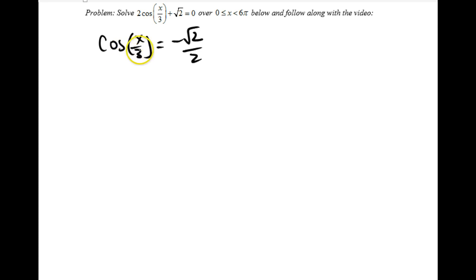Now my goal is to get x by itself. I need to get rid of the cosine, so let's take an arc cosine of both sides, and I get the arc cosine of negative root 2 over 2. The idea here is I'm trying to get x by itself with this period change, but I can't deal with this until I deal with the arc cosine.